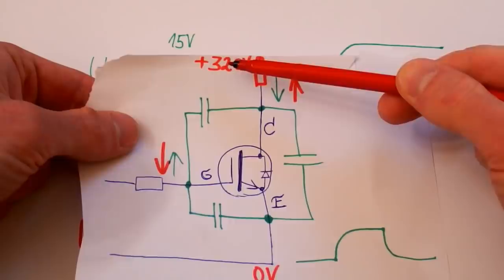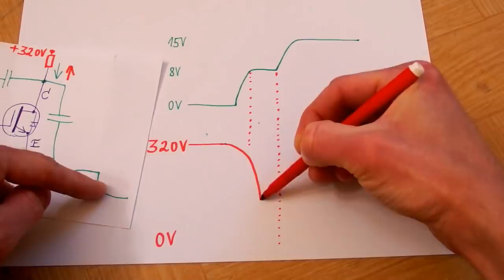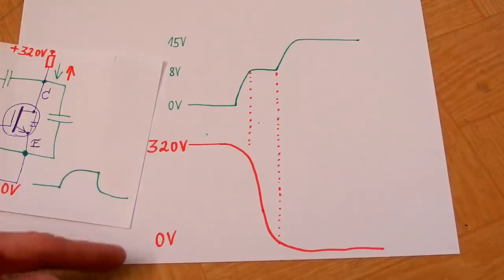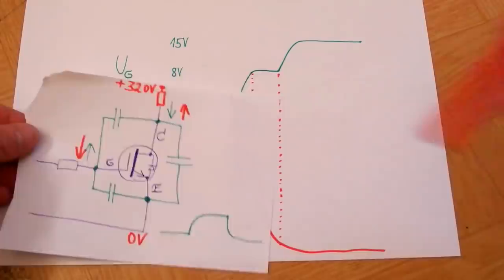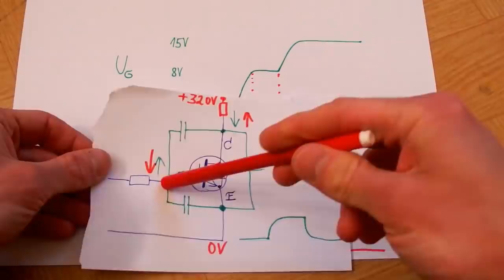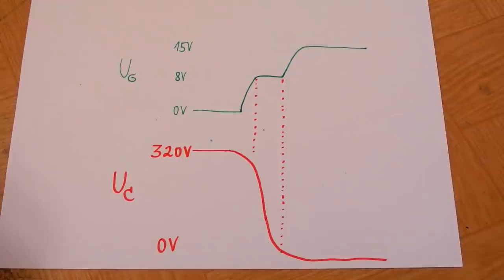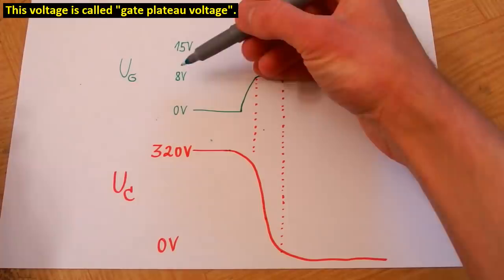Imagine the transistor switches a load — as it turns on, it pulls the collector voltage down. It starts turning on slowly, then turns on the fastest as the collector voltage falls the fastest, reaching nearly 0 volts — actually about 2 volts due to the transistor voltage drop. In this region where the collector voltage is falling the fastest, the reverse capacitance has the highest effect and prevents the gate voltage from going up, because the falling collector voltage pushes the gate voltage down via the Miller capacitance.